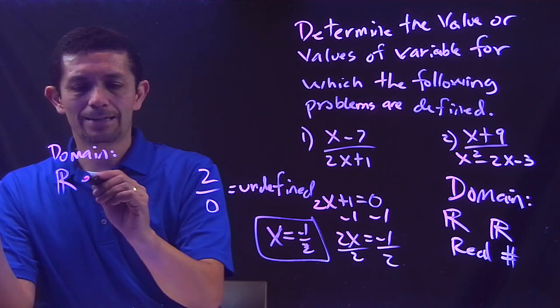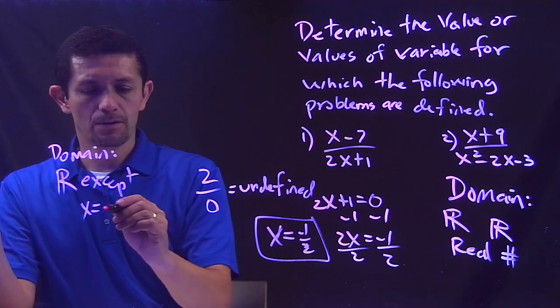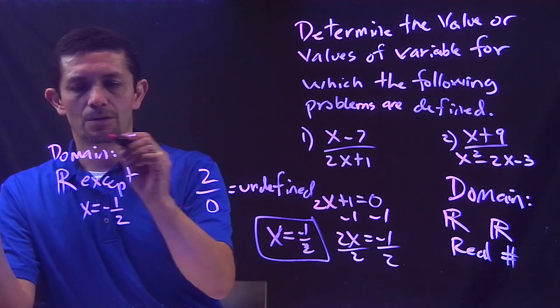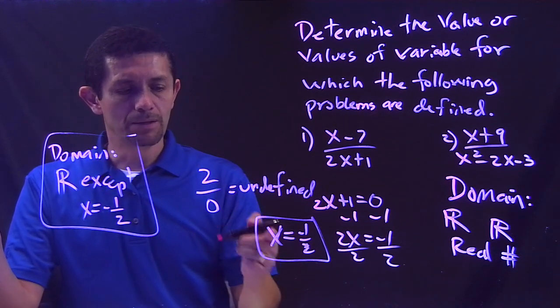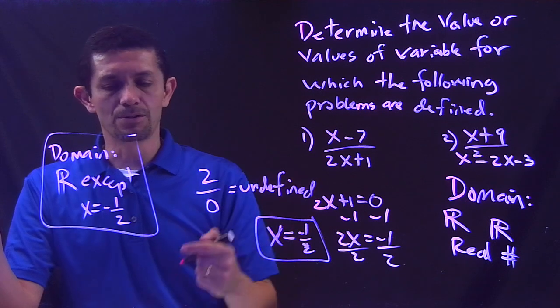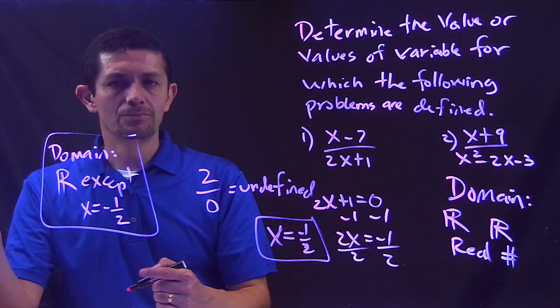So domain for this function will be all real numbers except when X equals negative 1 over 2. And that will be the solution for that problem because that will make the denominator 0.